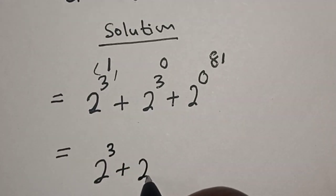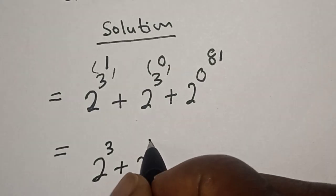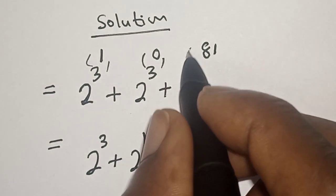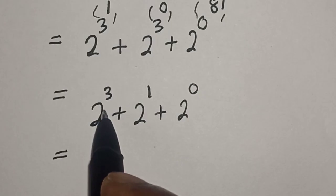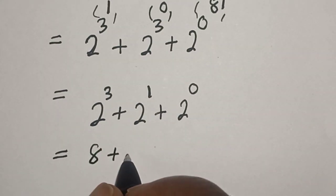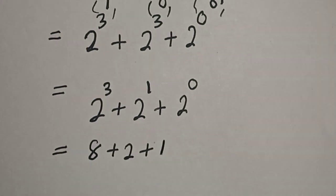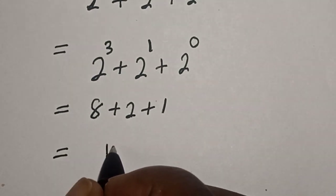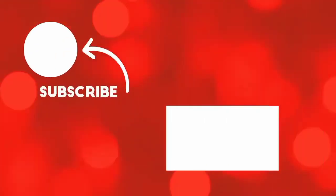3 plus 2, and 2 raised to the power of 3. 2 raised to the power of 0 is 1. Then this is equal to 8 plus 2, that is 10, plus 1 equals 11. That is our final answer. Like, share, comment and subscribe. Thank you.